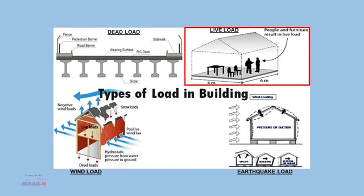The second load is live load. Live loads are the loads which occur in any structure as per their occupancy and use. It is also a gravity load which comes on slab, beam, stairs, and balconies. IS 875 Part 2 deals with these types of loading. Live load is applied all over the superstructure except the plinth, and generally varies according to the type of building.